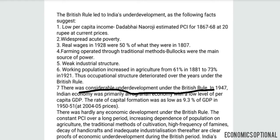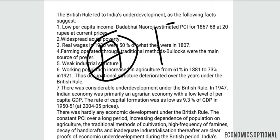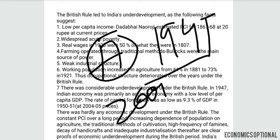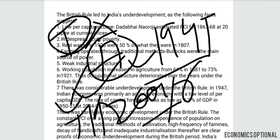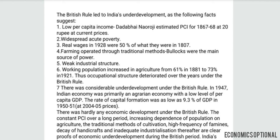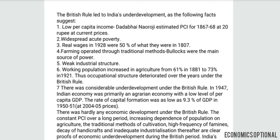There was considerable underdevelopment under British rule. In 1947, the Indian economy was primarily an agricultural economy with a low level of per capita GDP. We were mainly dependent on agriculture — industries which were once world-leading were totally discarded, and we were fully dependent on agriculture, from where the British made high profits. The rate of capital formation was as low as 9.3% of GDP in 1950–51 at 2004–05 base prices.